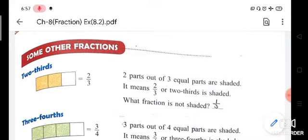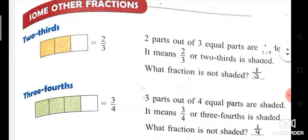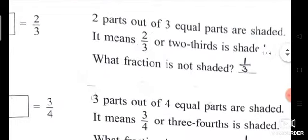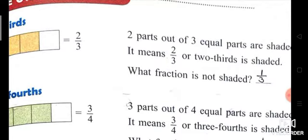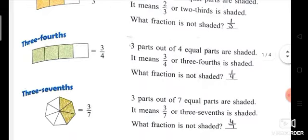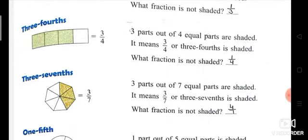You can see here two-third. Two-third means two by three, which means two parts out of three are shaded. So two-third part is shaded. What fraction is not shaded? Out of three, two are shaded and one is left, so one upon three is not shaded. Two upon three is shaded and one upon three is not shaded.